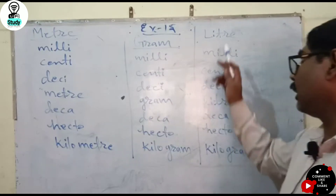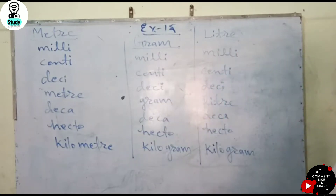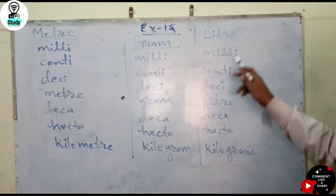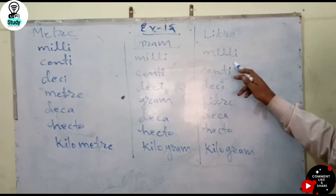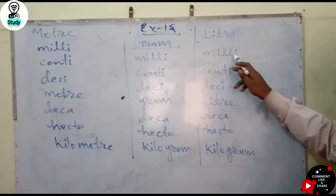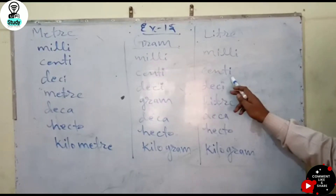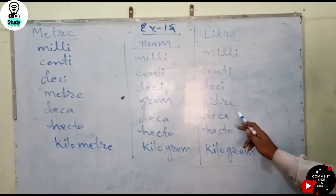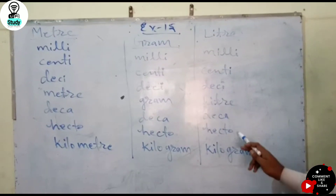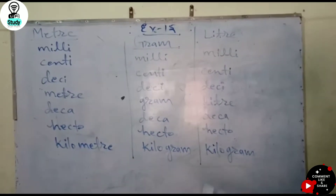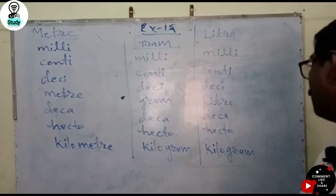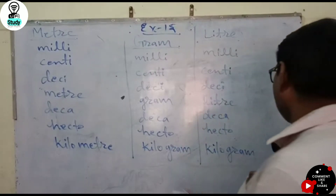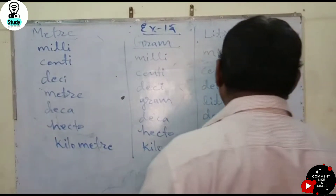And in Units of Volume: Milliliter, Centiliter, Deciliter, Liter, Decaliter, Hectoliter, and Kiloliter.